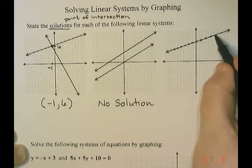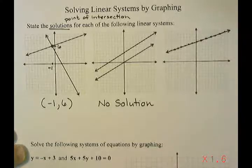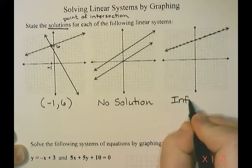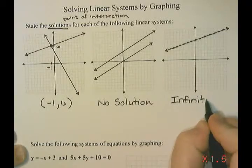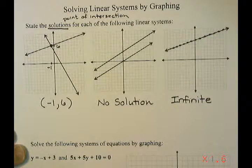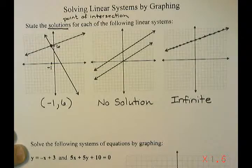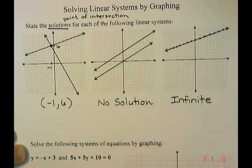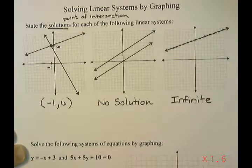So rather than list every single point along that line, we say that there are infinite solutions. Infinity is the largest number we can have, so an infinite number of solutions means that there are millions upon millions upon millions of points where these two lines cross.